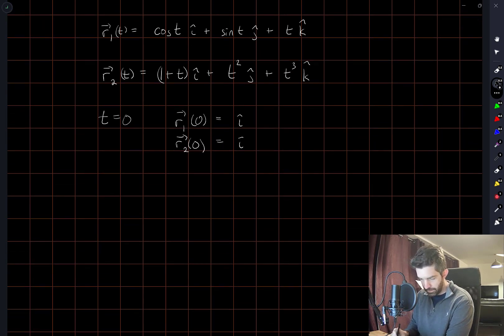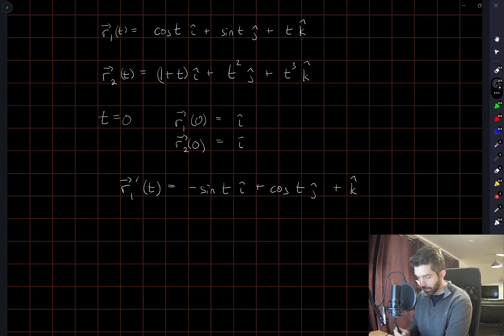So the derivative of the first curve with respect to t is that. I'm just differentiating each of the coefficients with respect to t and evaluating this at t equals 0. Gives j plus k, j hat plus k hat.